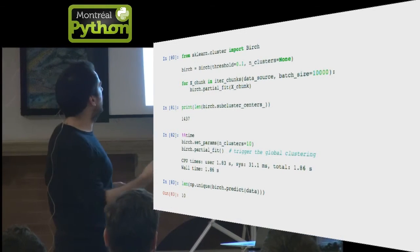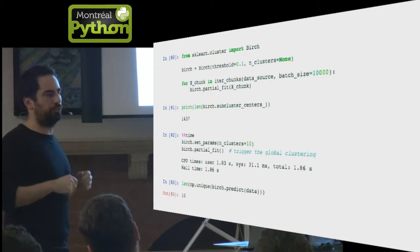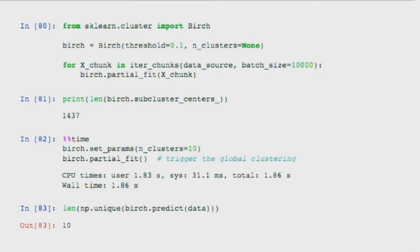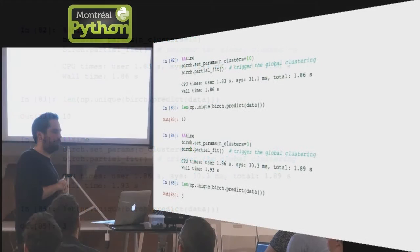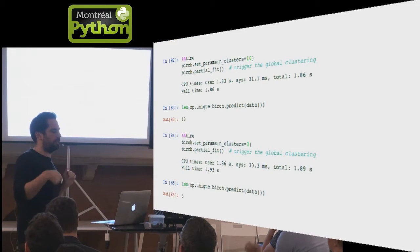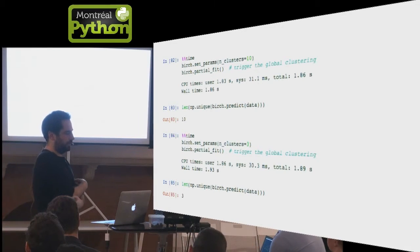At the end, you can see that Birch has sub-cluster centers, which is a compressed representation of the full data set. Finally, we have a weird API to trigger the final clustering by setting the number of clusters that you want to extract out of that summary and call partial fit once more without any data. That will trigger the global clustering, and then you can use it to compute prediction on new data. If you want to change the number of clusters, you can change that at the end. You don't need to re-scan the full data set.